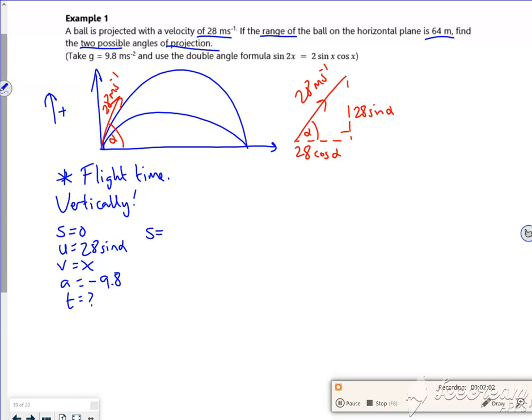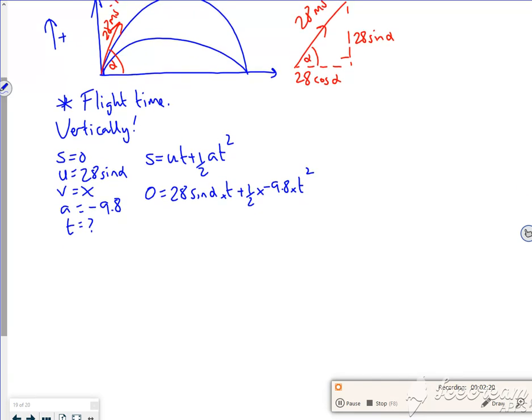So I'm going to use s = ut + ½at². So 0 = 28 sin alpha · t + ½ × (-9.8) × t². Now I can make a quadratic out of this. I'll take it over to the other side. But I can't use poly because I've got two unknowns.